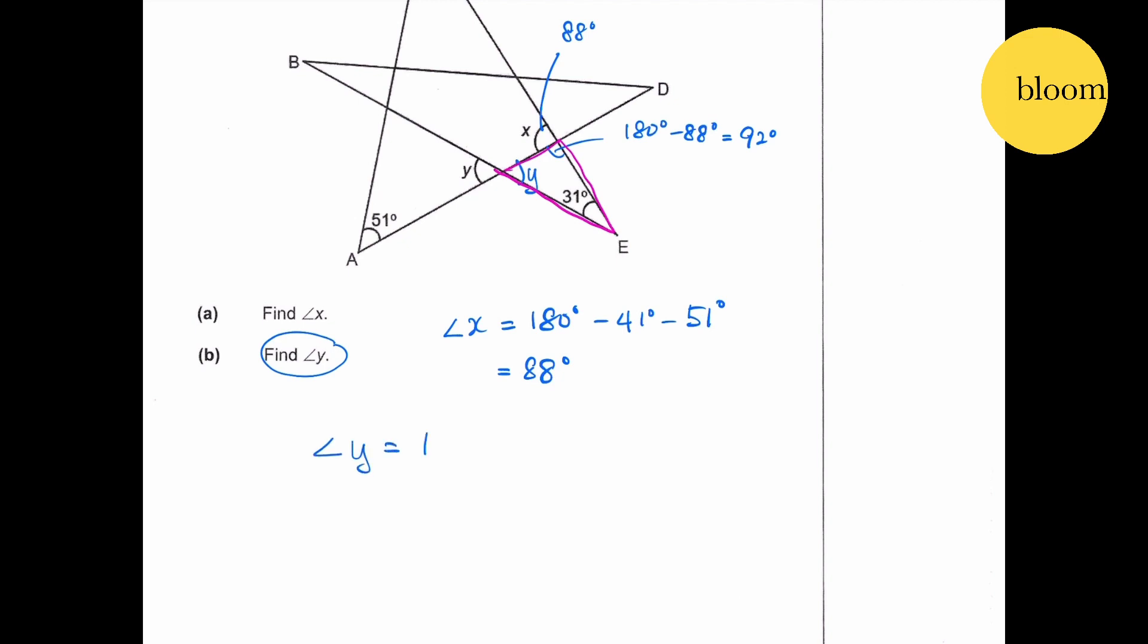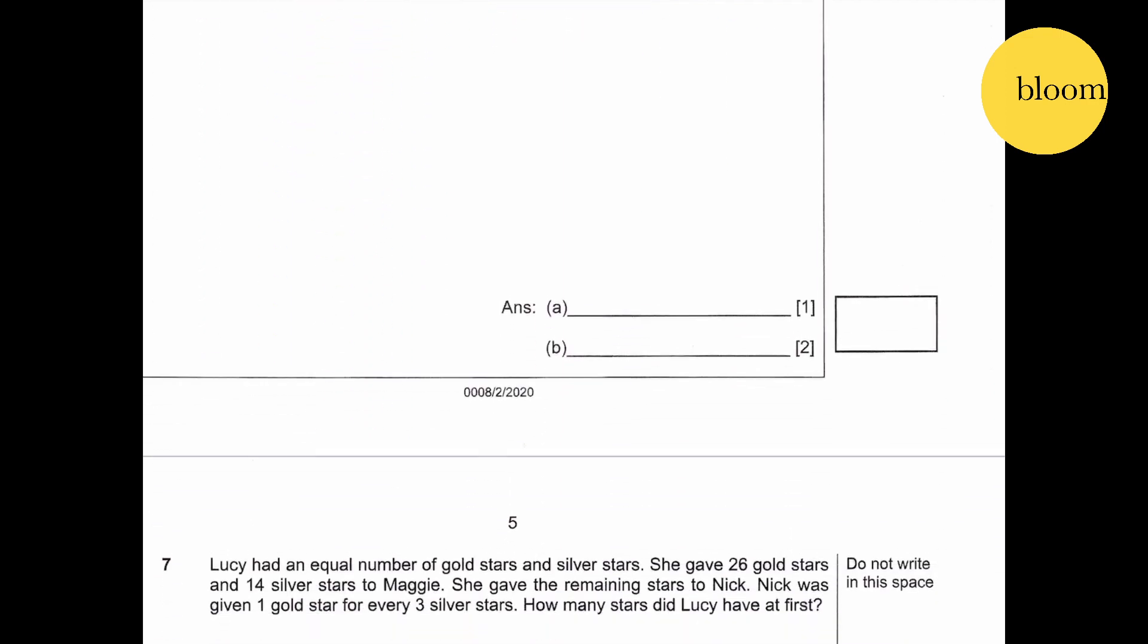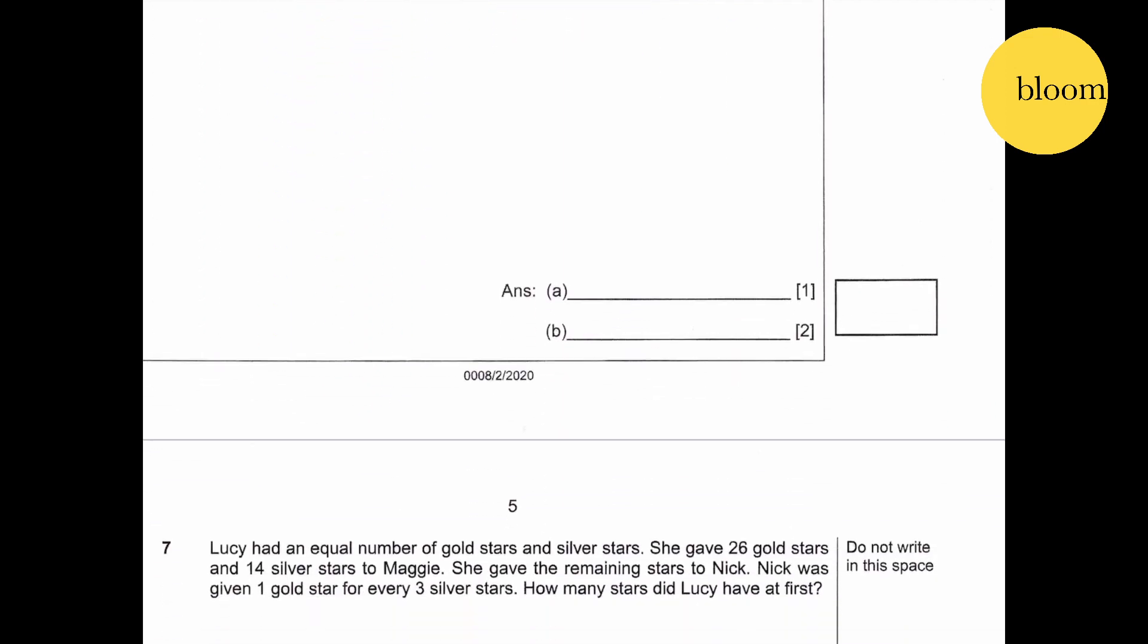Find angle Y equals 180 minus 31 degrees minus 92 degrees, which gives you 57 degrees. So this is 88 and 57 degrees.